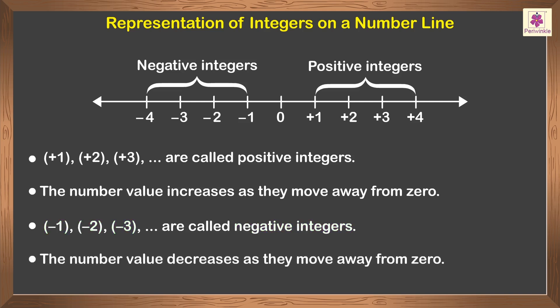Negative one, negative two, negative three, and so on are called negative integers. The number value decreases as they move away from zero. The integer zero is neutral — it is neither positive nor negative.